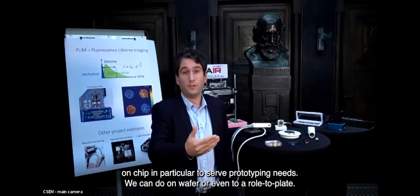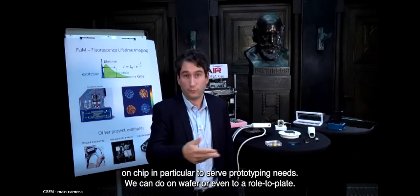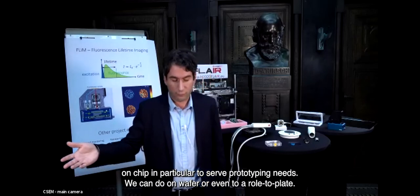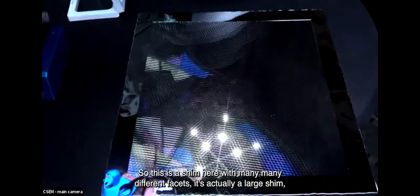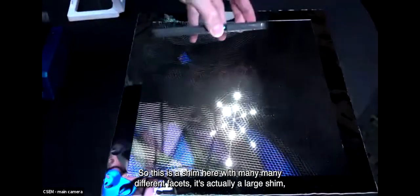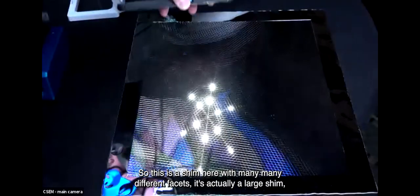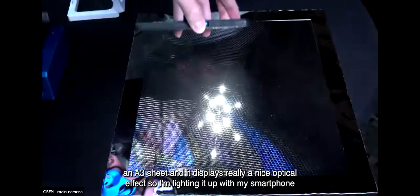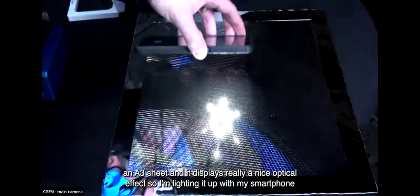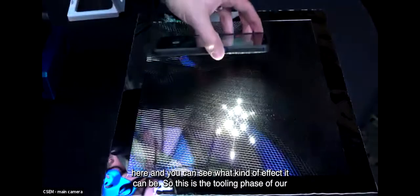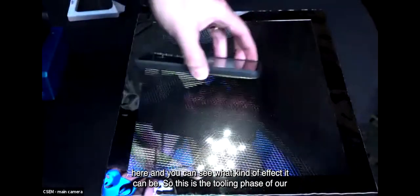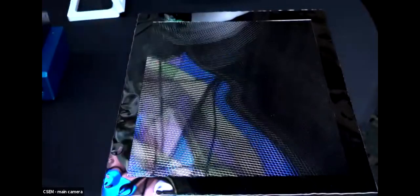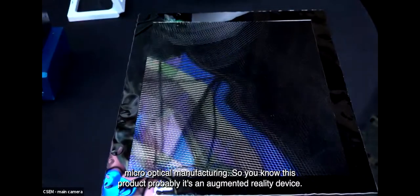We can do UV imprint on chip, particularly to serve prototyping needs on wafer or even roll-to-roll. This is the shim here with many different facets - it's actually a large shim, A3 sheet size. It displays a really nice optical effect. I'm lighting up with my smartphone here, and you can see what kind of effect it can be. This is the tooling phase of our micro-optical manufacturing.